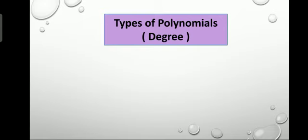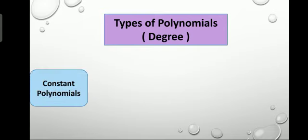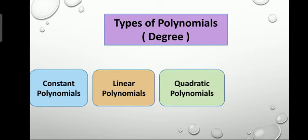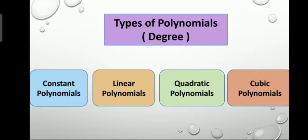Then come types of polynomials according to degree. Constant polynomials have no degree, meaning degree is equal to zero. Linear polynomials have a variable with a degree of one. Quadratic polynomials have a variable with a degree of two. Cubic polynomials have a degree of three. There are other higher powers as well, but in this chapter we will particularly use these four degrees.